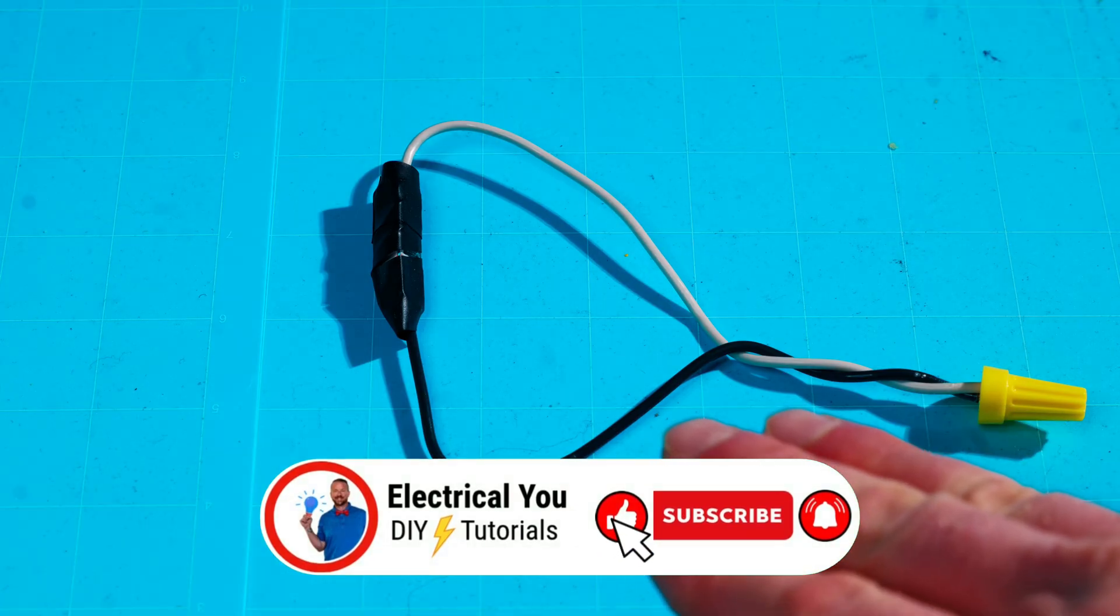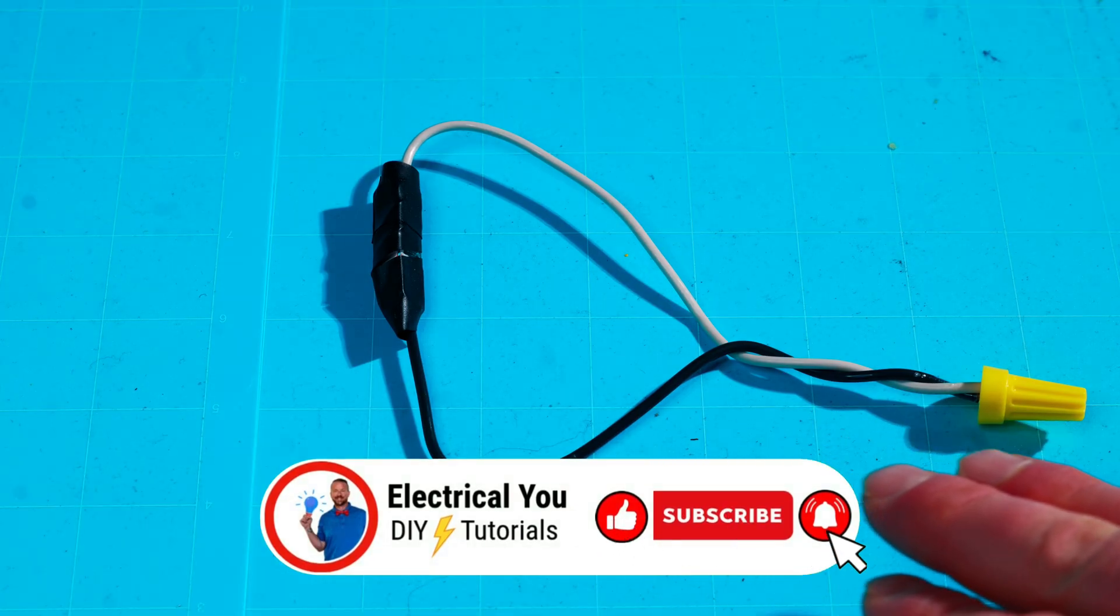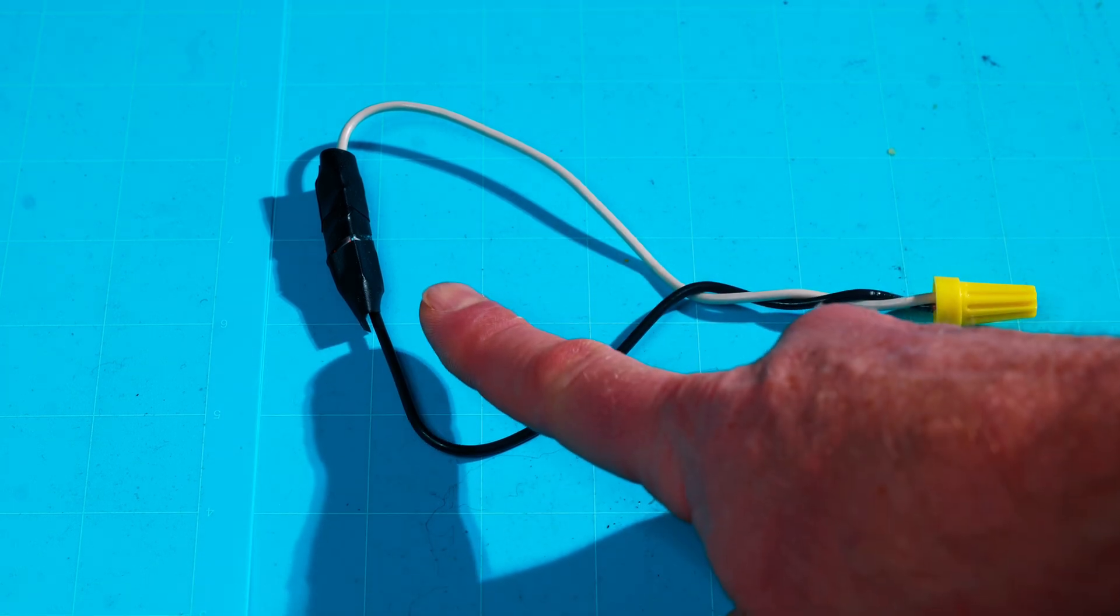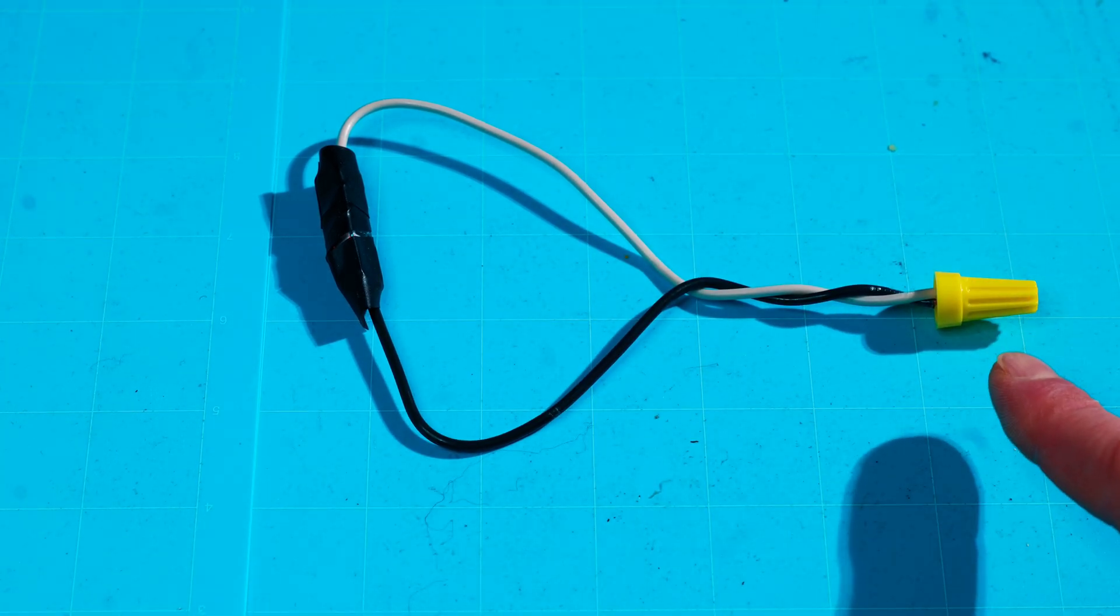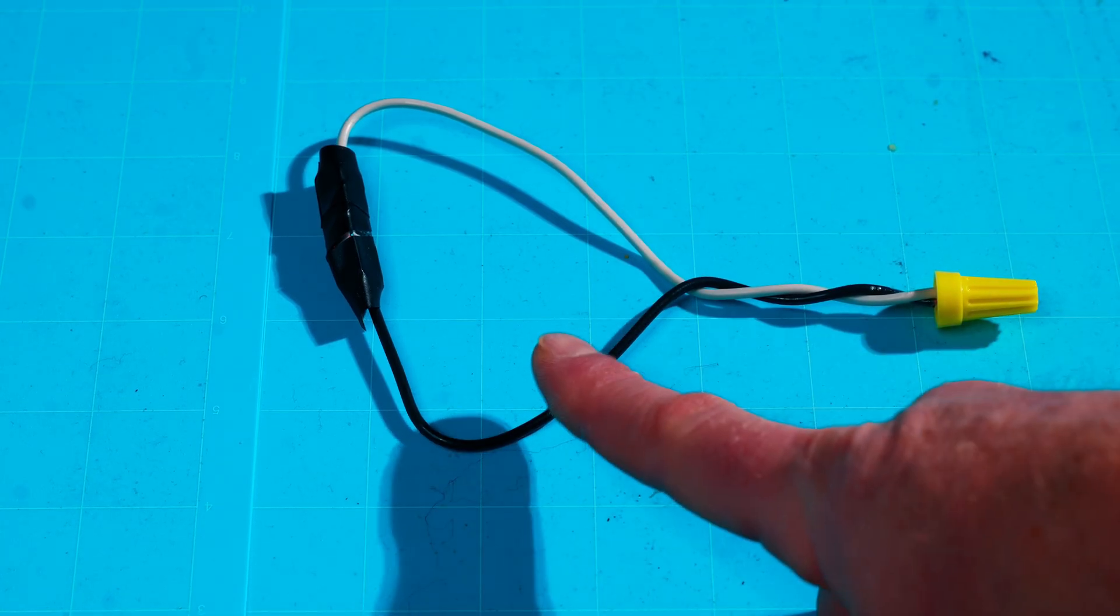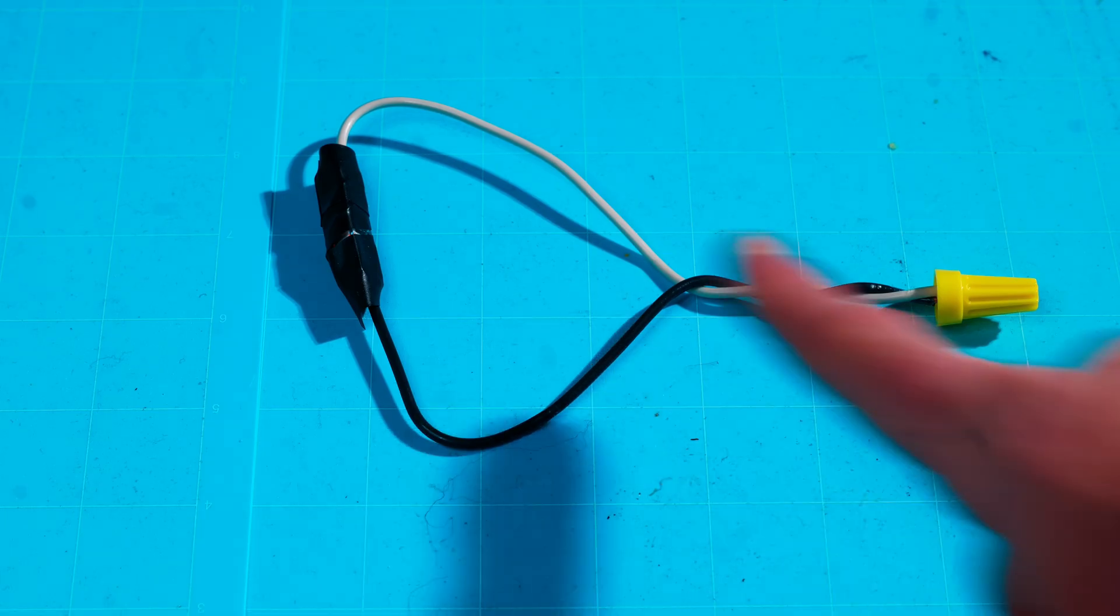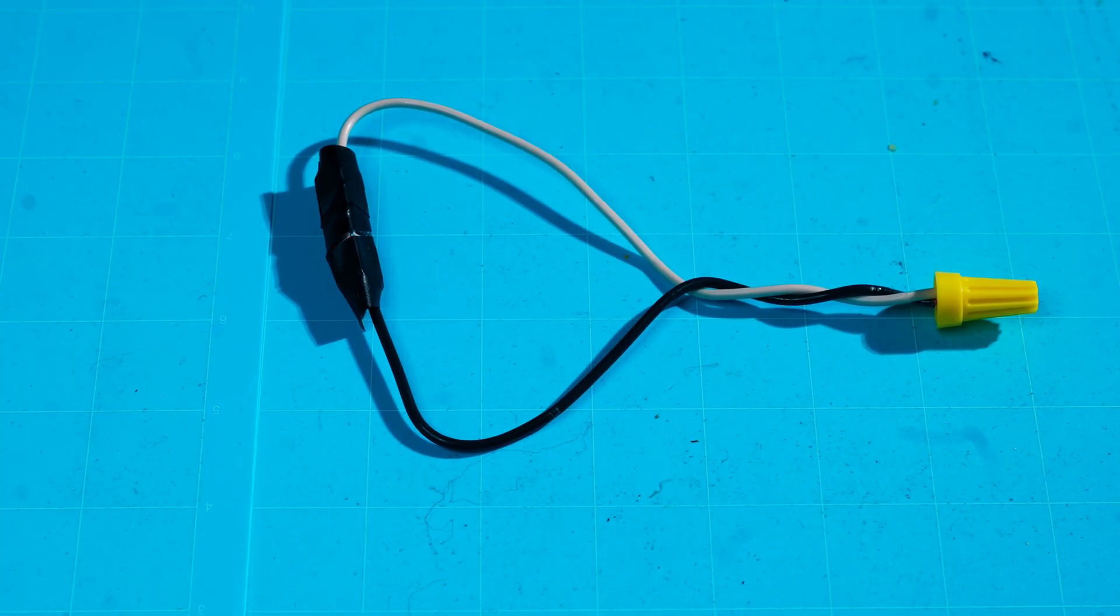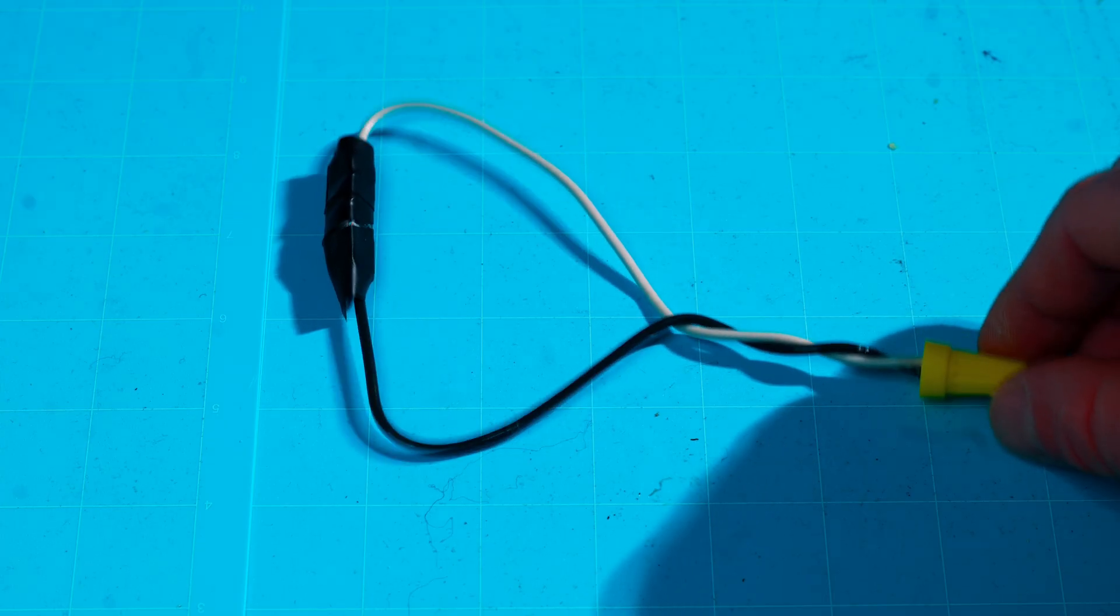Now, again, like I said, every connection has its proper place. There are still times where I'm going to use my wire nuts over the Waggo 221s. And it's just really a preference of the project that I'm on, the room that I have for each different type of mechanical or termination type. It's really up to you as the electrician or the homeowner to figure out which method you're going to use.